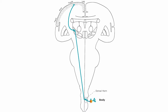The first neuron has its cell body in the dorsal root ganglion and synapses almost immediately in the spinal cord. The second neuron crosses to the opposite side and ascends through the brain stem to the ventral posterior lateral nucleus of the thalamus. The third neuron, located in that nucleus of the thalamus, ascends through the internal capsule to terminate in the postcentral gyrus, which is primary somatosensory cortex.